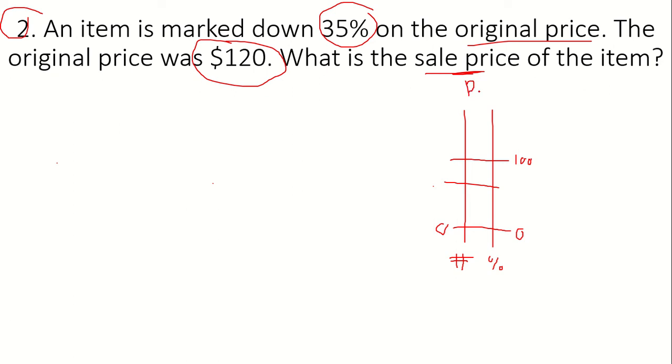So, first we're going to make a double number line to find the sale price of the item. At 100%, our value is going to be $120. That's the original price of the item, so we're going to call that 100%. Next, we're taking down 35%. We're marking the item down by 35%.